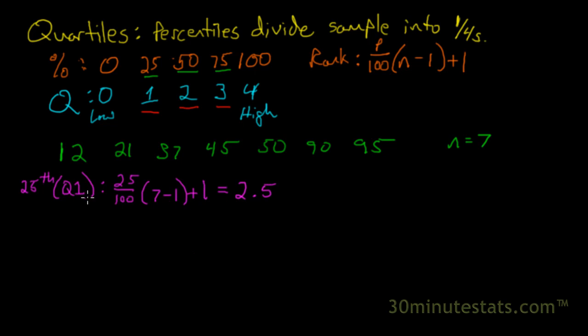We know that our 25th percentile, or Q1, is going to be located somewhere between the second and third observation. More importantly, it's actually half the distance, 0.5 of the distance from the second to the third observation. Here's the second, 21, and here's the third, 37. So Q1 is somewhere in here.